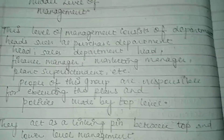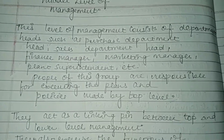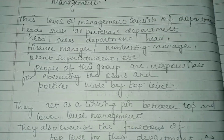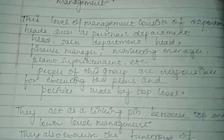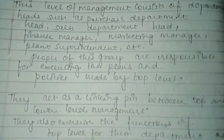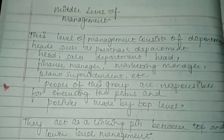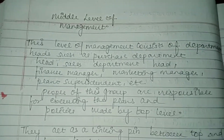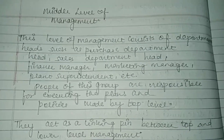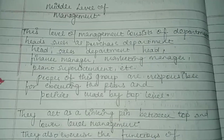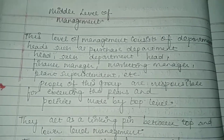We discussed what levels of management are. We discussed 3 levels: top level, middle level, and lower level. Then we discussed what top level is, what its meaning is, which executory authorities are coming to it, and then we discussed its features. Now we will talk about middle level.